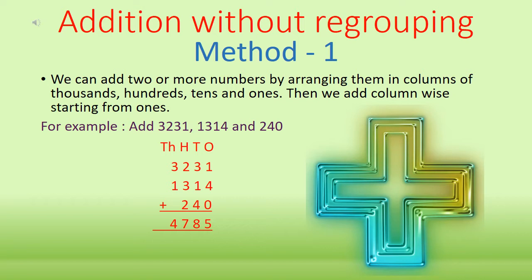Next, we will take the tens column. The digits in the tens column are 3, 1, and 4. 3 plus 1 is 4, and 4 plus 4 is 8. Next, we will take the hundreds column. The digits here are 2, 3, and 2. 2 plus 3 is 5, and 5 plus 2 is 7. And finally, we will take the thousands column. The digits here are 3 and 1. 3 plus 1 is 4. So we get the answer 4,785.